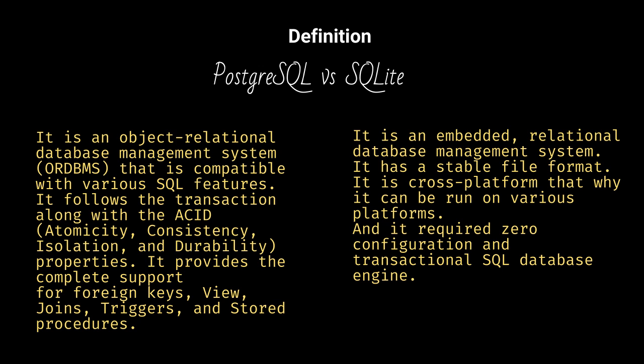SQLite is an Embedded Relational Database Management System. It has a stable file format. It is cross-platform, which is why it can be run on various platforms, and it requires zero configuration as a transactional SQL database engine.